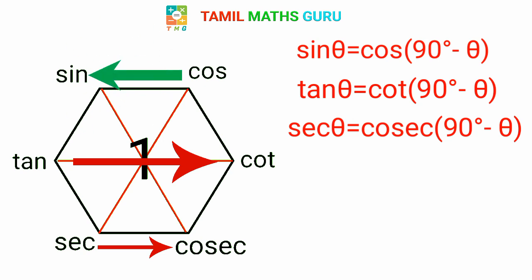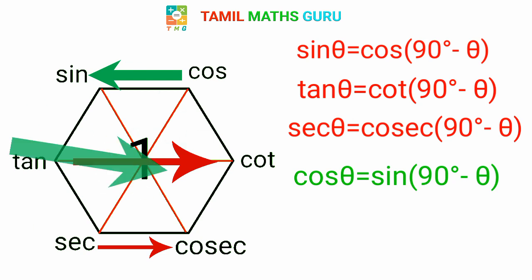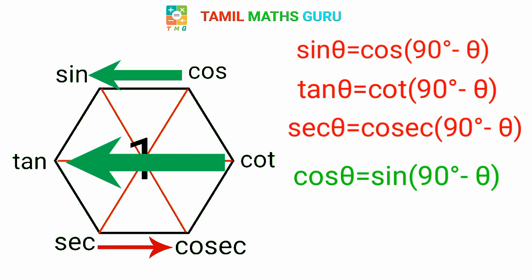Cosθ is equal to sin of (90−θ). And cotθ is equal to tan of (90−θ).